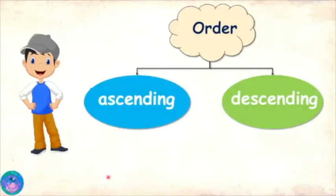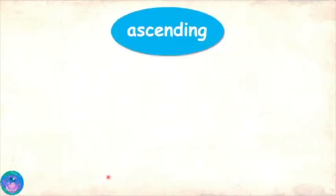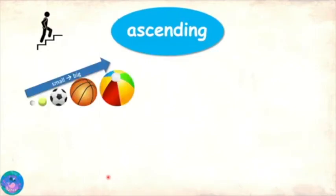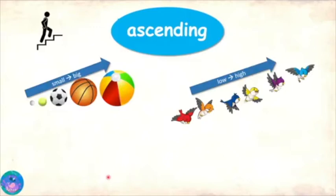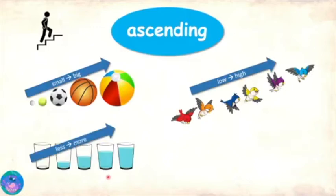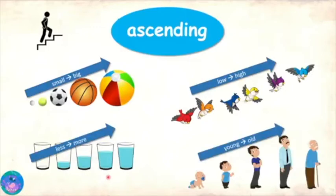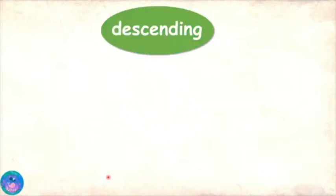We can arrange things and even numbers in ascending and descending orders. Ascending goes up, so ascending order means arranging from small to big, low to high, less to more, young to old, and so on.